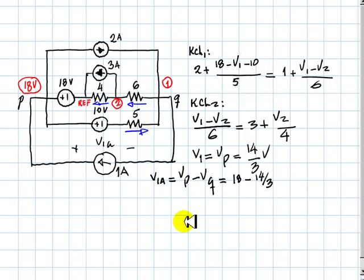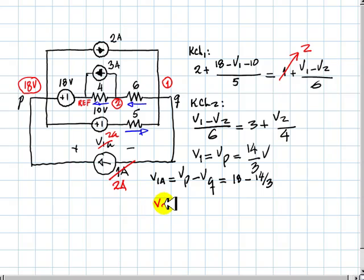For the second test, the 2 amp test, we replace this source by a 2 amp source, and now we compute not V1A, but V2A. The equations are exactly the same with the difference that this one here becomes a 2, and we solve for that again, and obtain in that case V2A.